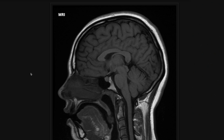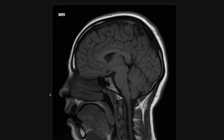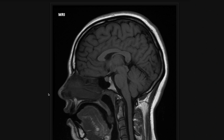Another good thing to look at on the sagittal T1 is the bones. You can see the calvarium here, and you can also see a lot of the cervical spine down here. On T1, you're looking for things that are dark within the bones — hypo-intensity within the bones can indicate pathology. So when you're done looking at all the midline structures, remember to look at the bones when you're on your T1.